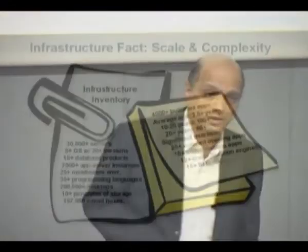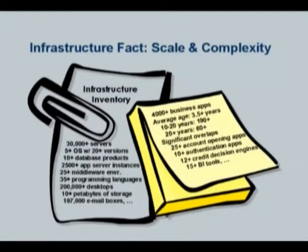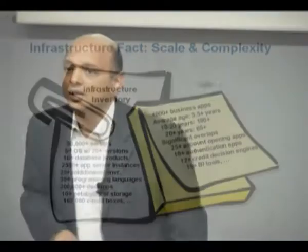This is data from a top tier bank in the US, and actually this is only part of their data. They run an environment with more than 30,000 servers, more than 20,000 databases, 2,500 application server instances, 35 different programming languages in their environment. If you start looking at the applications that run on top of that, it's pretty amazing: more than 4,000 business applications, anywhere from six months old to 20 years old.